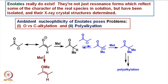If O-alkylation of this enolate takes place, we get the corresponding enol ether. If C-alkylation takes place, we get the alpha-alkylated ketone — in this case, an alpha-methylated ketone. So in addition to this dual character of the ambident nucleophile where O and C-alkylation can occur, we need to control which one occurs if we want a specific product.